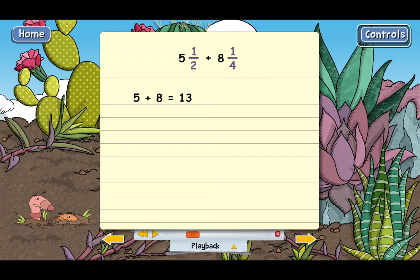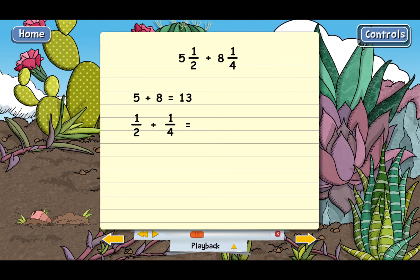And then we add the fraction parts second. The fraction parts are one half from five and one half and one fourth from eight and one fourth. So that gives us one half plus one fourth. And let's go ahead and add those together. The LCD of two and four is pretty easy. It's just four.